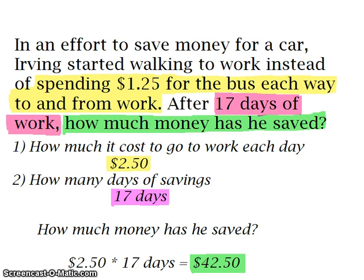In order to find out how much money he has saved, we are going to multiply the total amount of money he paid each day to go to and from work — that is $2.50 — times the number of days of savings, which is 17 days. So after walking to work for 17 days, Irving has saved $42.50. That's pretty good.